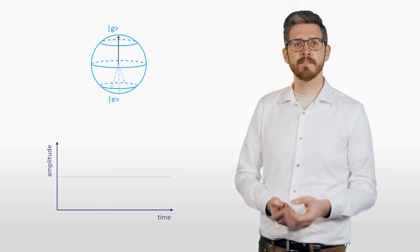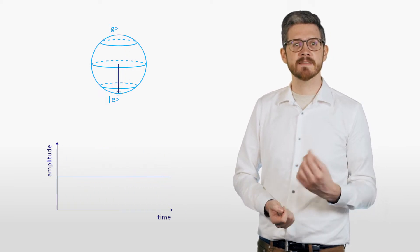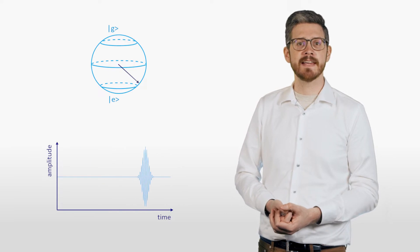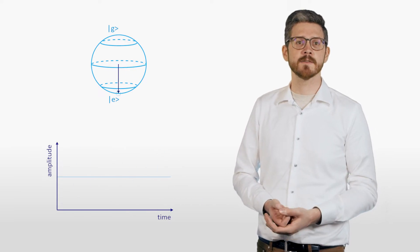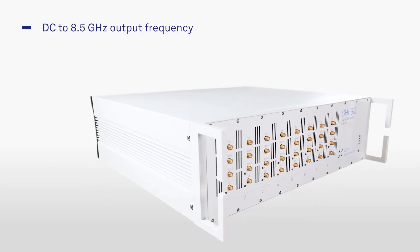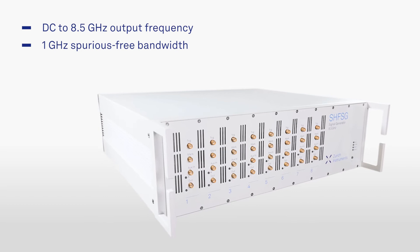The SHFSG can directly generate the required gate sequences at the microwave frequencies you want, providing the precision necessary for high fidelity gate operations, all in a single instrument. The signal output covers frequencies from DC up to 8.5 GHz and a 1 GHz spurious-free modulation bandwidth.